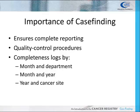Case finding is necessary to ensure complete reporting. Cancer registries use many quality control procedures to guarantee all cases are captured and reported. Completeness logs can help monitor the number of cases found, and multiple completeness logs can be used to ensure all cases have been identified. For example, the number of cases by month and department, by month and year, or by year and cancer site. By comparing different monthly and/or annual reports, underreported areas can be identified so that immediate corrections can be made.